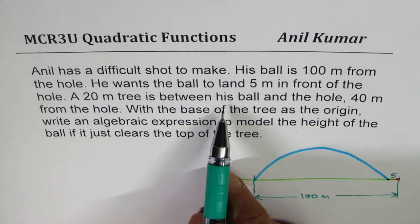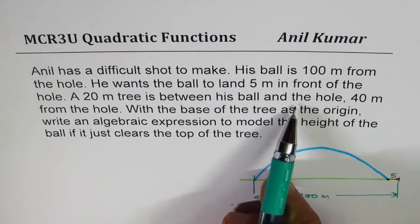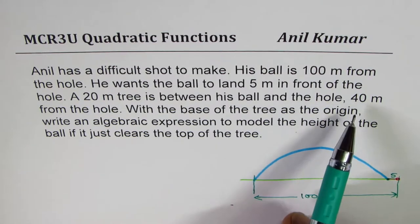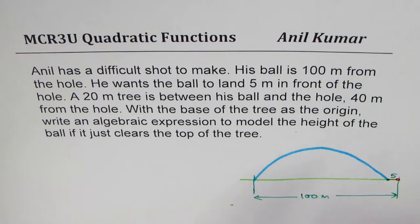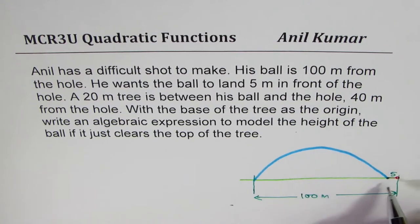A 20 meter tree is between his ball and the hole, 40 meters from the hole. So from this hole, 40 meters.